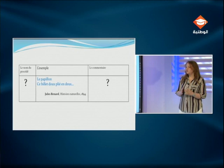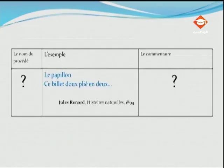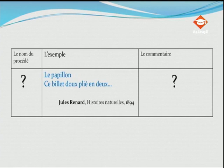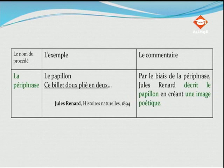Cinquième exemple, deux vers de Jules Renard : « Le papillon, ce billet doux, plié en deux. » Pour décrire le papillon, le poète a choisi l'expression « ce billet doux, plié en deux » pour donner les caractéristiques de cette créature qui ressemble à un billet et qui a une qualité : la douceur. Quel est ce procédé ? C'est une périphrase. Au lieu de désigner le mot directement, on emploie une expression équivalente pour donner les caractéristiques de l'objet en question. Par le biais de la périphrase, Jules Renard décrit le papillon en créant une image poétique.